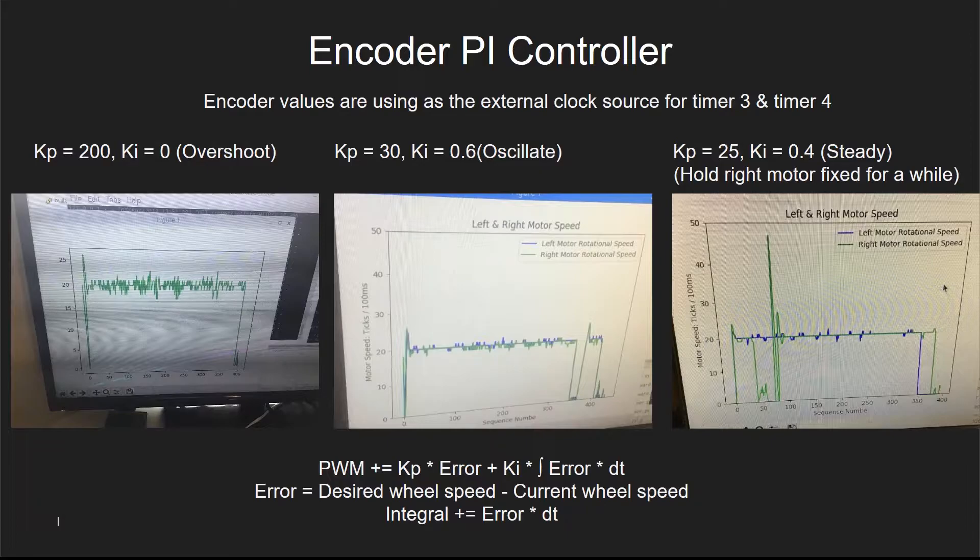For each motor, it has two encoders. The output of the encoder will be set to high and then back to low whenever the motor rotates a certain degree of angle. Since the output of the encoder is a square-wave signal, we can use it as the external clock source of our hardware timer, in our case, timer 3 and timer 4. By doing so, we can measure the rotational speed of the motor by checking the counter value of the selected timer. For every 100 milliseconds, the counter value of those two timers will be passed into the left and right motor PI controller in order to adjust its rotational speed in real time.